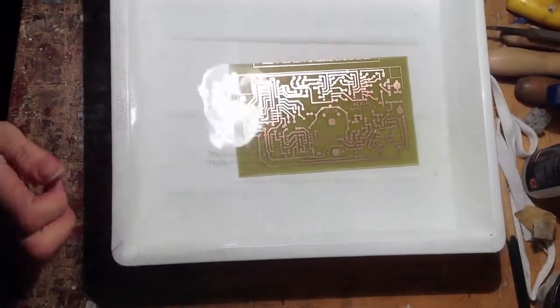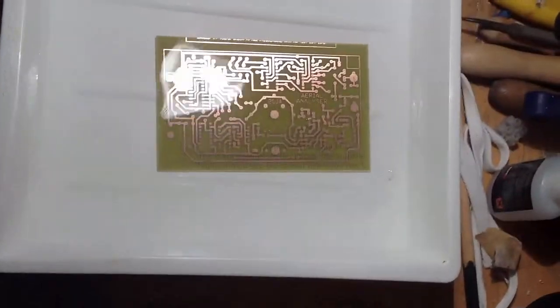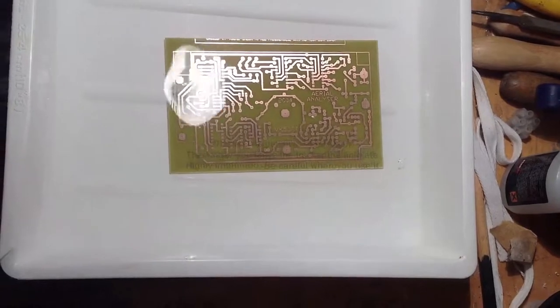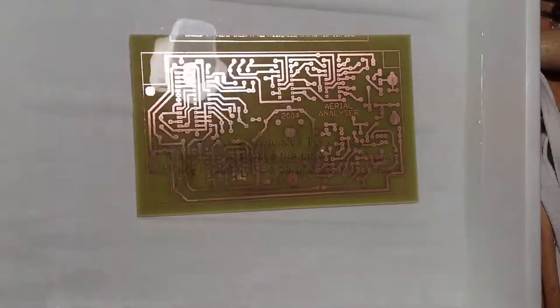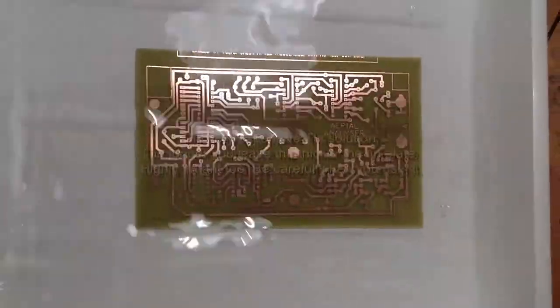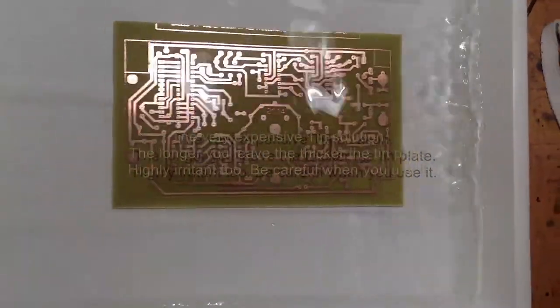Now we come on to the next part which is the all important tin solution. If you're not going to use a tin solution, then after you've soldered on your components, you really should get a good lacquer on there, otherwise the board starts going very dark and oxidizing.